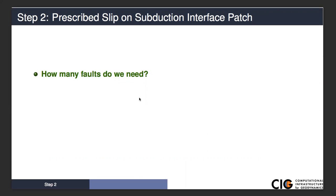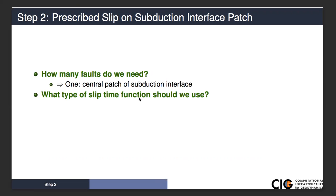How many faults do we need? We're having uniform slip on a single patch, so just one. What type of slip time function should we use? We want to impose co-seismic slip at a single time step — a step time function. PyLith does not have a delta function for slip. We're going to impose it at 10 years, letting the model run freely from zero to 10 years.